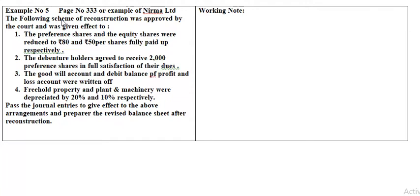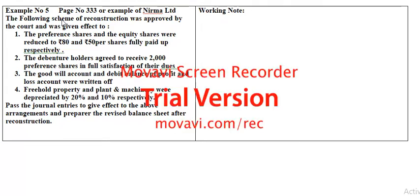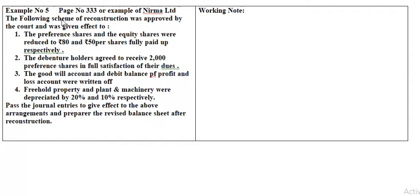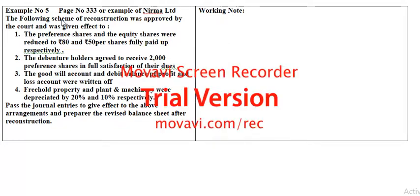Check the balance sheet on screen. They have given the balance sheet: equity share capital is 12 lakh, reserve and surplus is minus 3 lakh 80,000, long-term borrowings is 3 lakh 50,000, trade payables is 2 lakh 10,000, and total equity and liabilities is 13 lakh 80,000. Non-current assets — tangible assets 9 lakh 50,000.